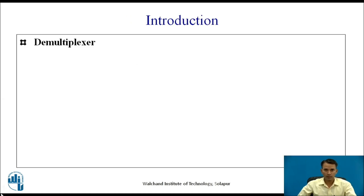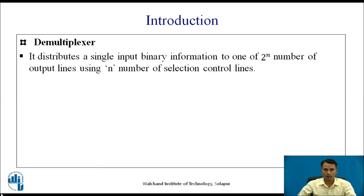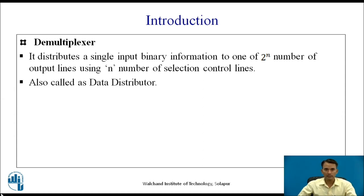Before proceeding further, we have already discussed demultiplexers. Take a pause here and recall what a demultiplexer is. A demultiplexer is a combinational logic circuit which distributes a single input binary information to one of the 2^n number of output lines using n number of selection lines, also known as control lines. Demultiplexers are also known as data distributors because they distribute the same information to all of the outputs one by one.